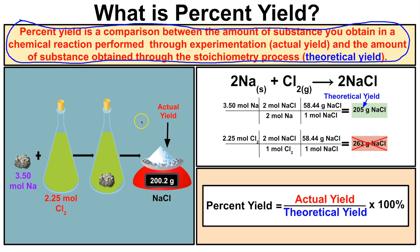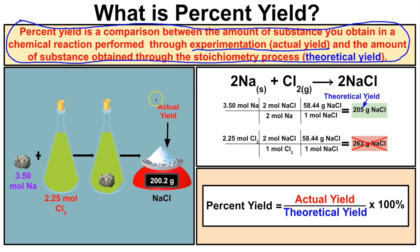So far in these videos we have been learning how to calculate theoretical yields — running the stoichiometry process through a chemical reaction and determining how many grams or moles can be produced from a given amount of a reactant. Percent yield is a comparison between the actual yield from the lab experiment and the theoretical yield from stoichiometry.